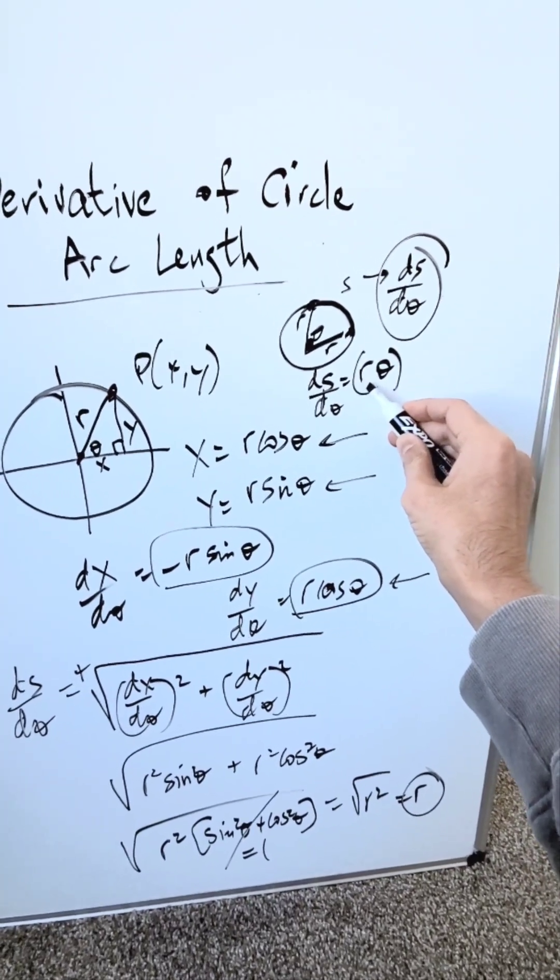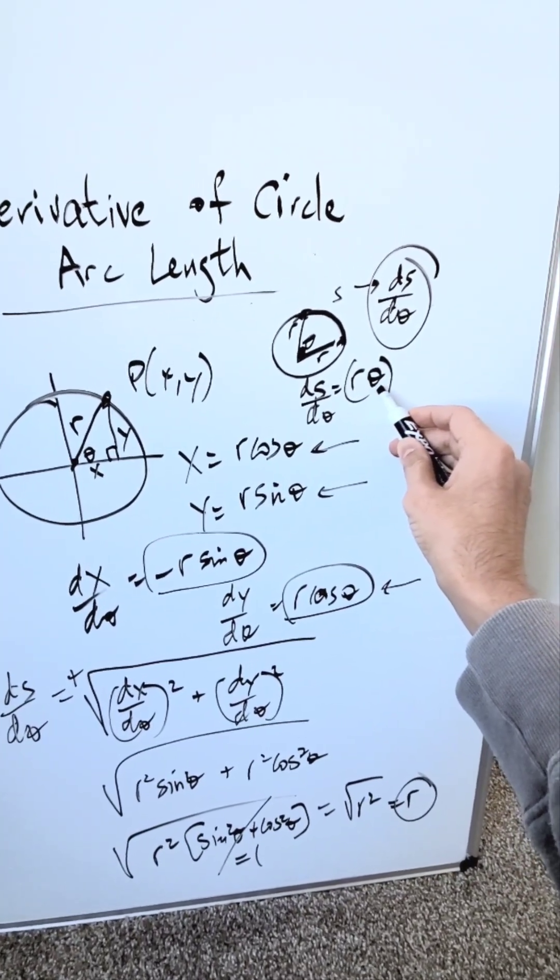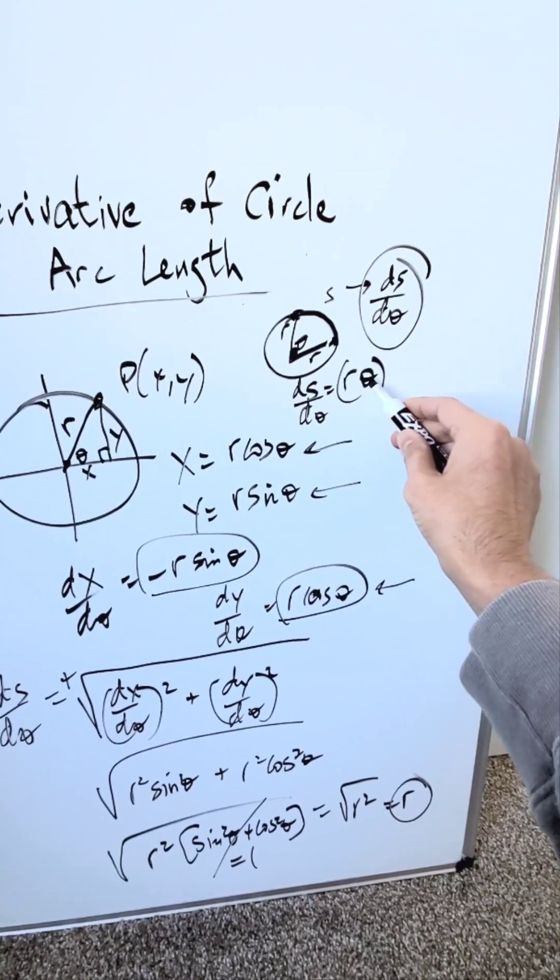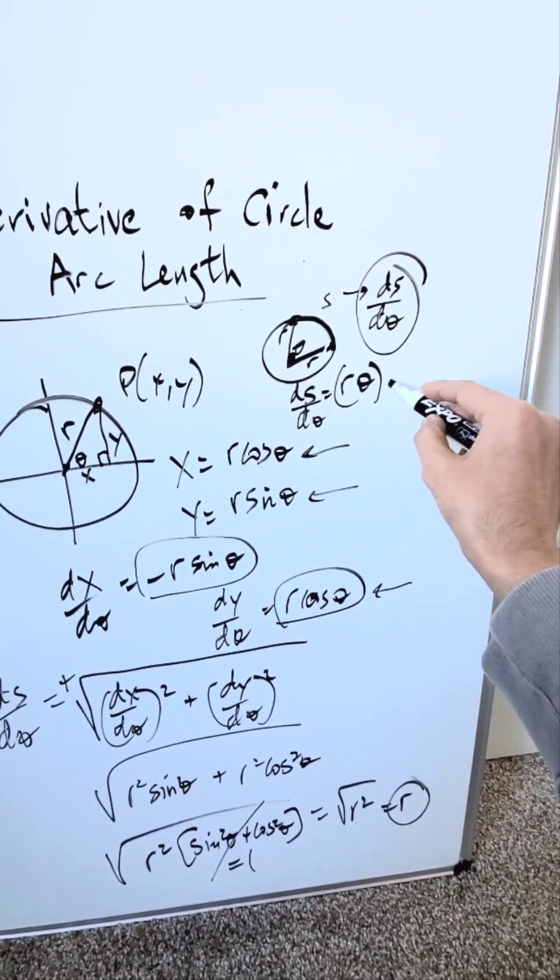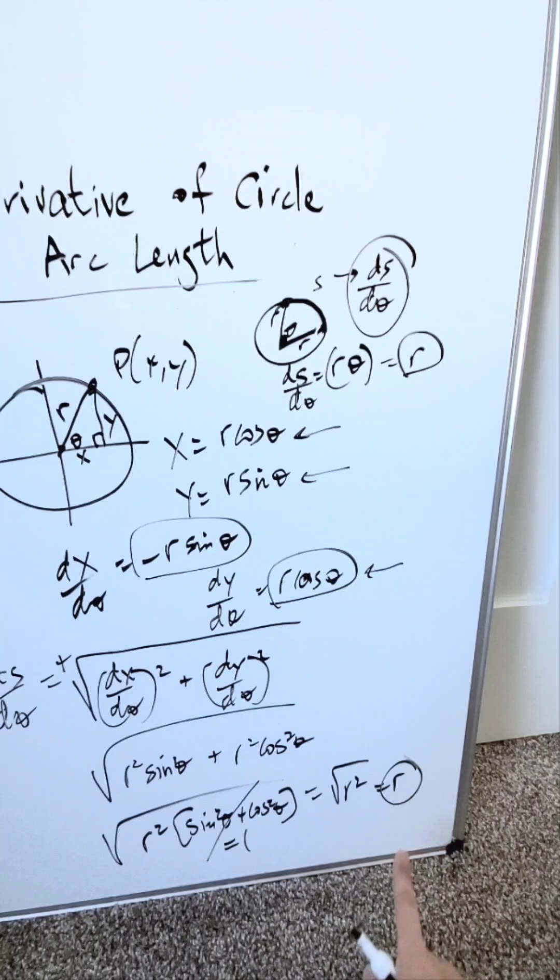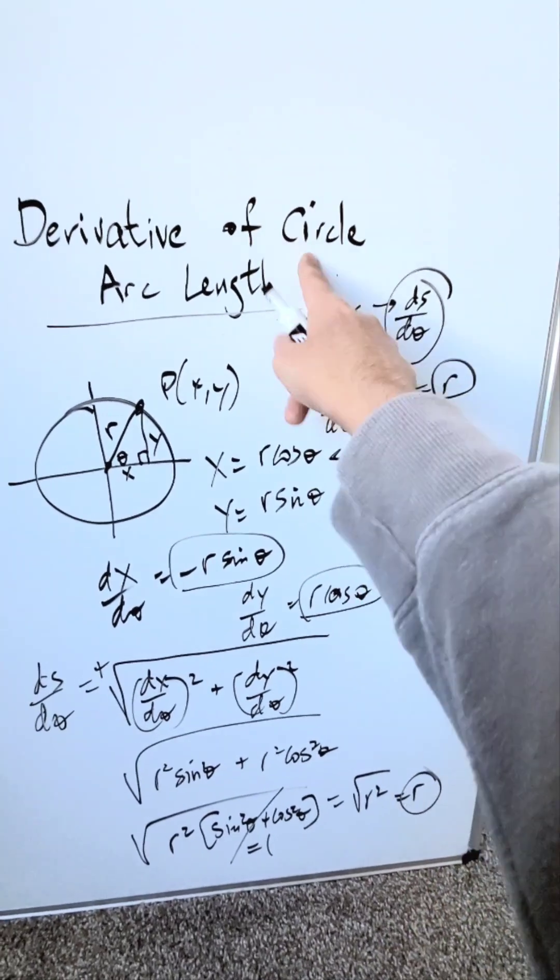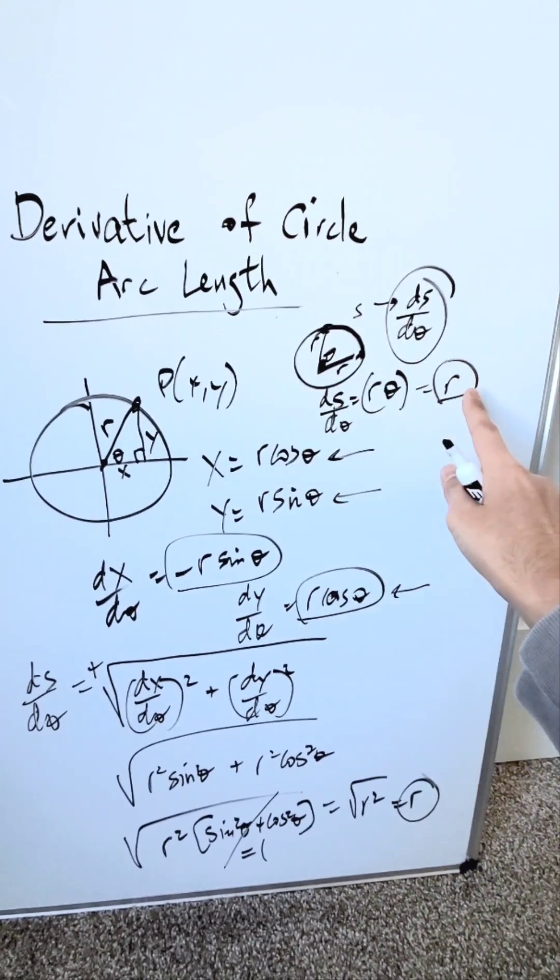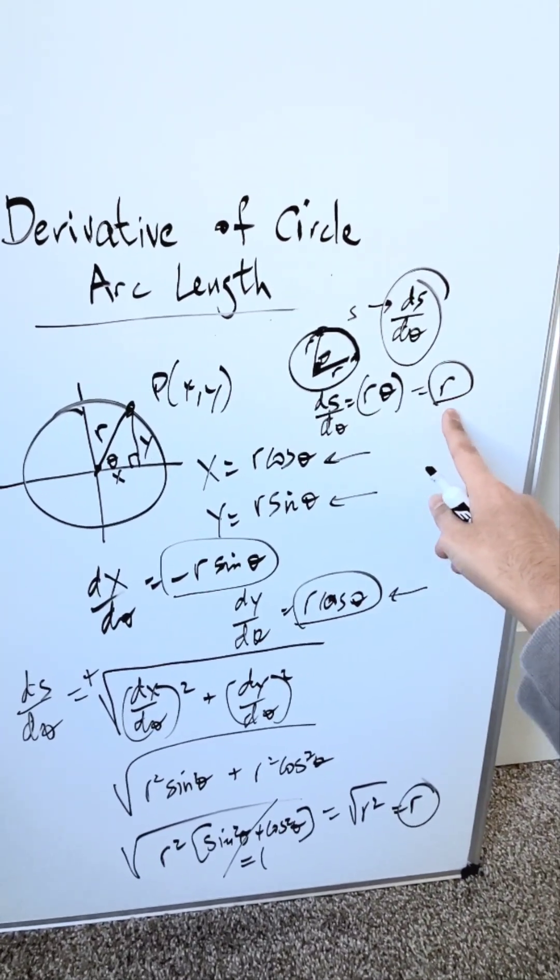Taking the derivative where radius is constant, I'm only differentiating the θ variable. Using the power rule on θ, you end up with just the radius. This is the same answer we derived - the derivative of circle arc length depends only on its radius.